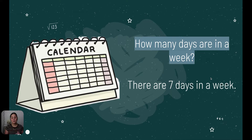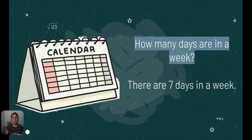So how many days are in a week? There are seven days in a week, and we learned this also when we were studying multiples of seven. We can multiply seven by the number of weeks to find out how many days there are.